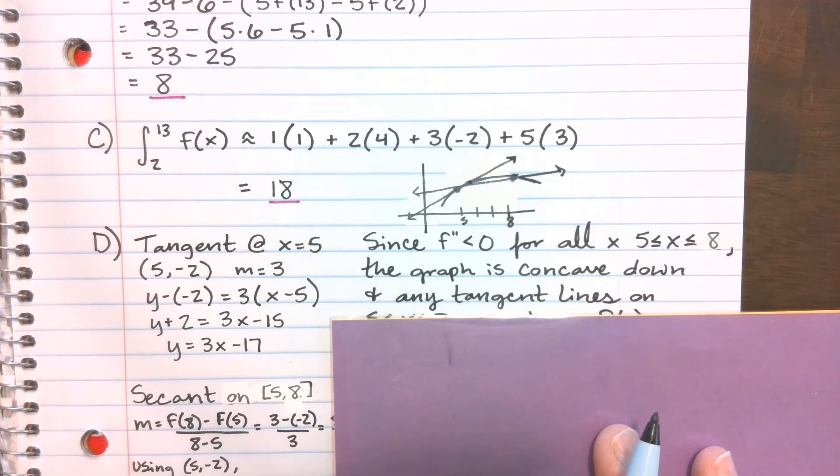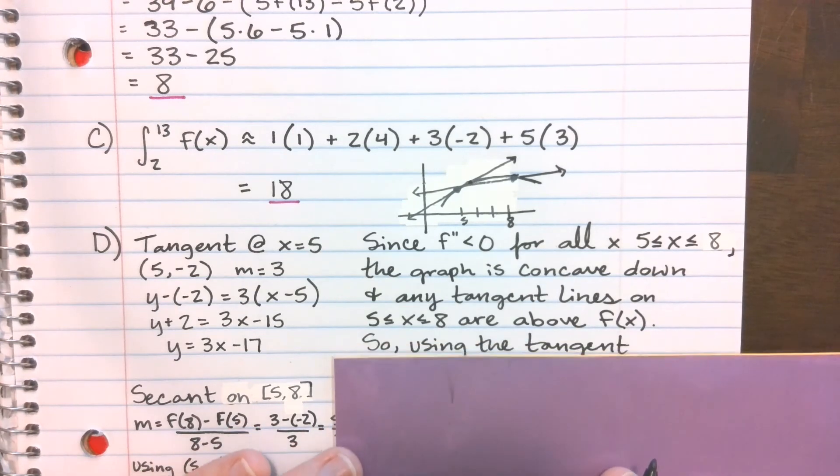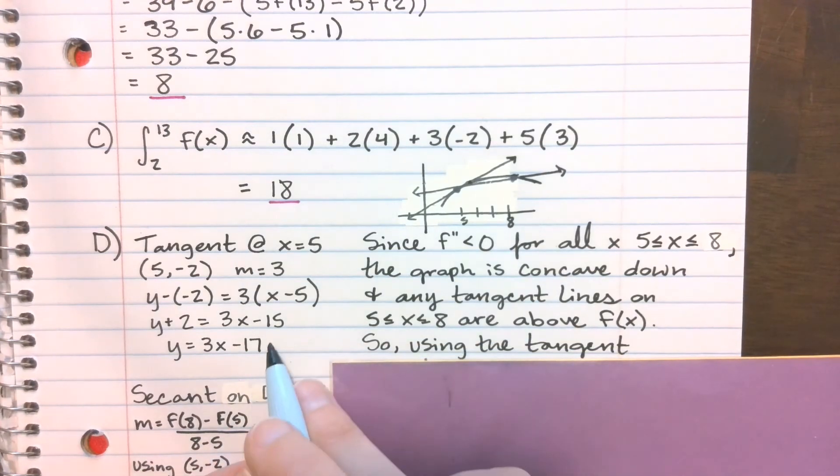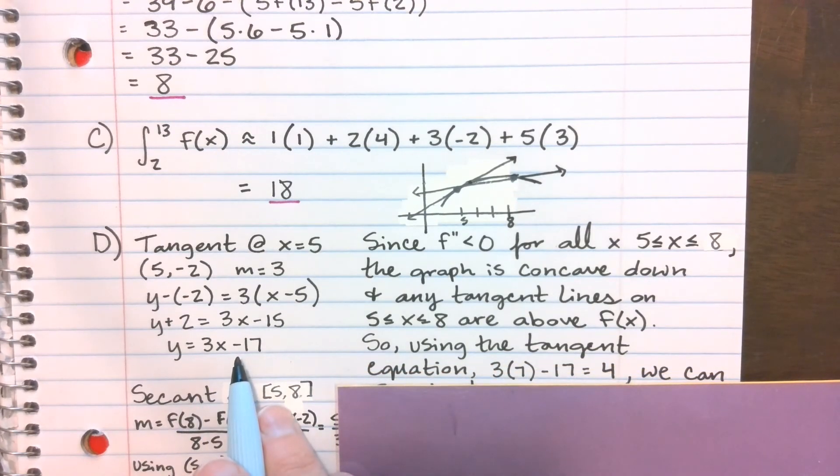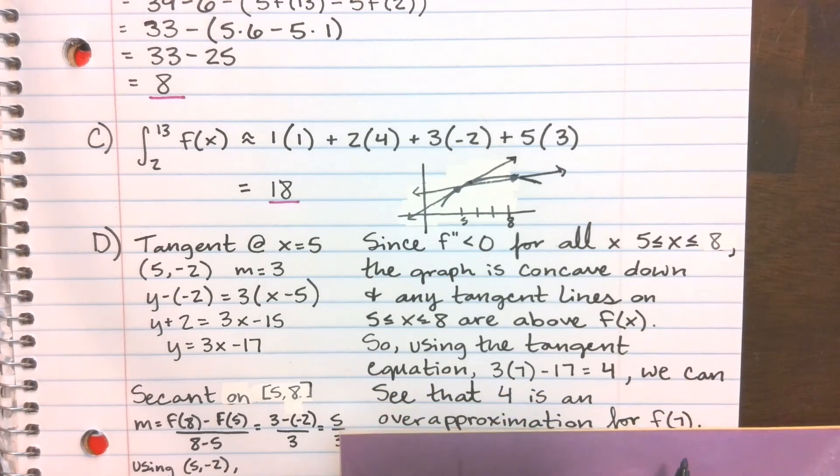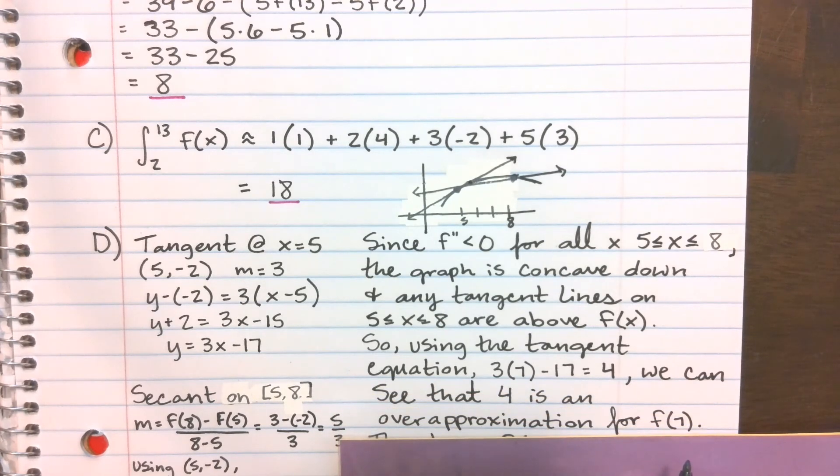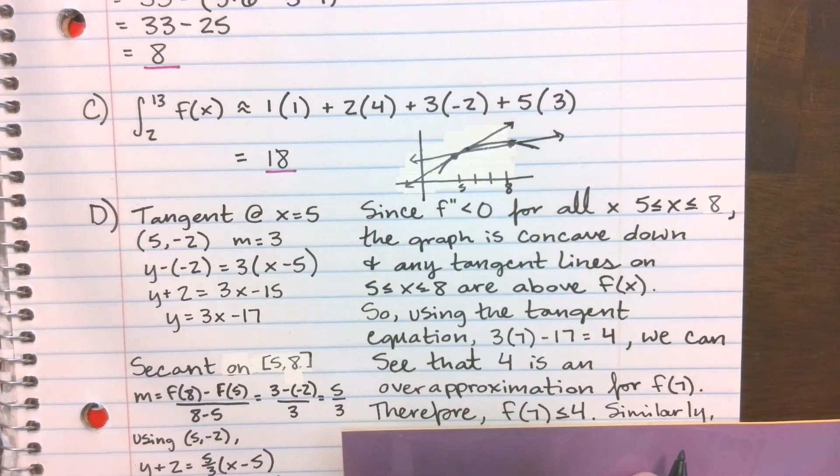That's what that tangent equation here for x of 5, and plug in our 7. It should be an over-approximation. So when I plug in 7, I get out 4, and then we can see that 4 has to be an over-approximation for f of 7, or in the words that they used, f of 7 has to be less than or equal to 4.